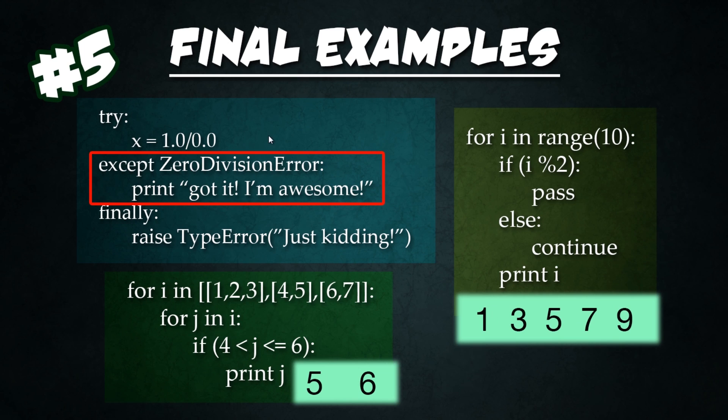Here's the final examples for number five. Here we're just using some of the exception handlers, try except and finally. This is actually going to try to assign x a value of one over zero, which is a mathematical impossibility. It's declared undefined because you can never divide by zero and it'll actually result in a zero division error. So it'll print out got it, awesome. So that would result in a zero division error, and so it would actually call this except statement and it would print out got it, awesome.